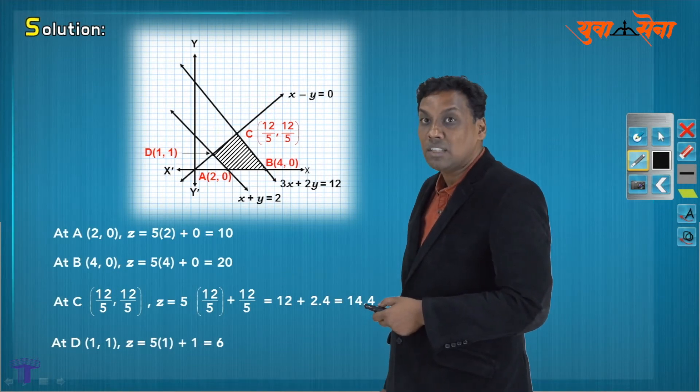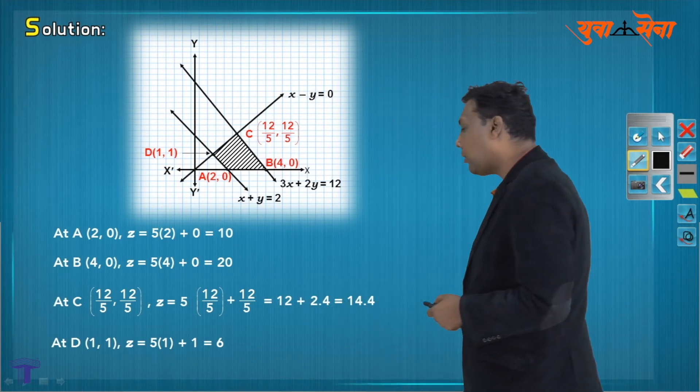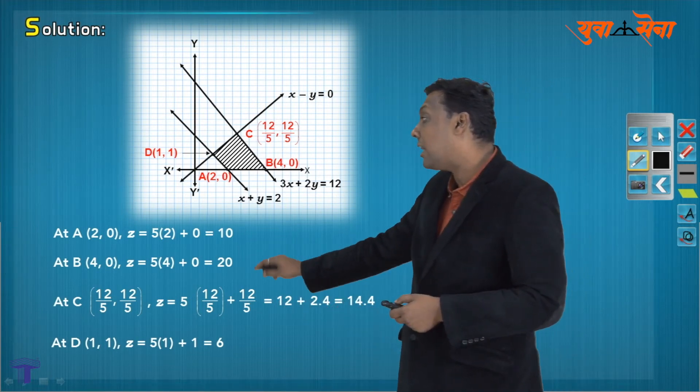If you remember, the question was maximize, so the answer is that one which the answer is highest. 10, 20, 14.4, 6. The answer, largest is 20. The answer must be A.